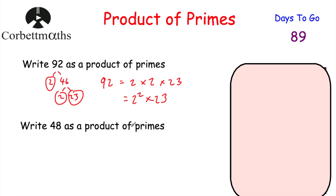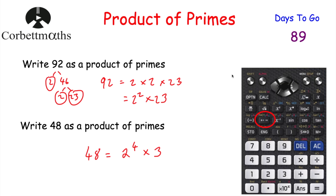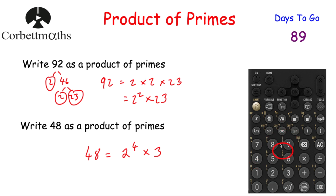For 48, we'll use the calculator. Type in 48, press equals, then press Shift and the FACT button (prime factorization). The calculator gives 2⁴ × 3. On the other calculator model, type 48, press equals, then press the Format button and select 'Prime Factor', press EXE, and it writes out 2⁴ × 3. So 48 = 2⁴ × 3.